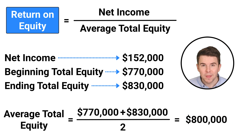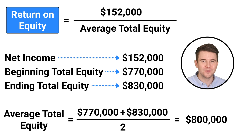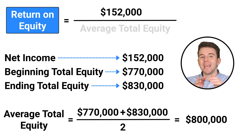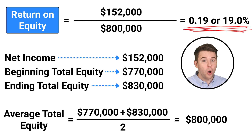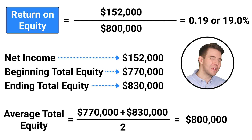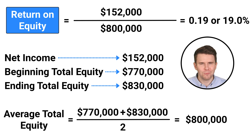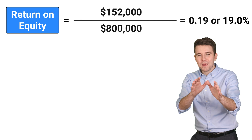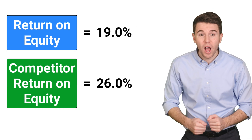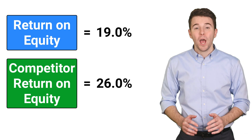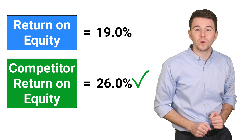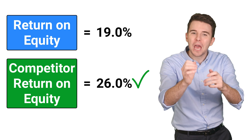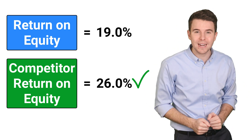Next, to compute return on equity, we take net income of $152,000 and divide by average total equity of $800,000 to get 0.19 or 19%. But what can we conclude from a 19% return on equity? To understand it better, let's compare it with a competitor's ratio of 26%. Based on return on equity, the competitor with 26% is performing better because a company aims to have a higher return on equity.